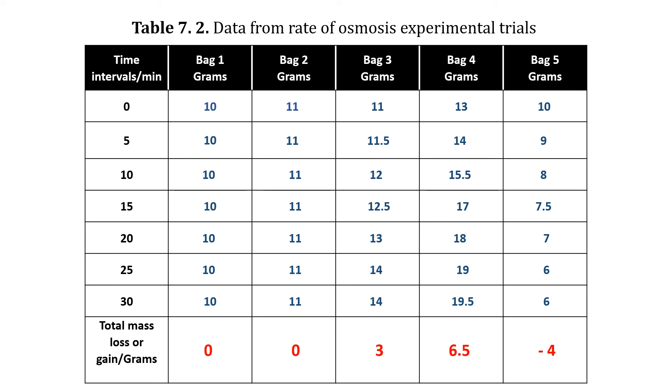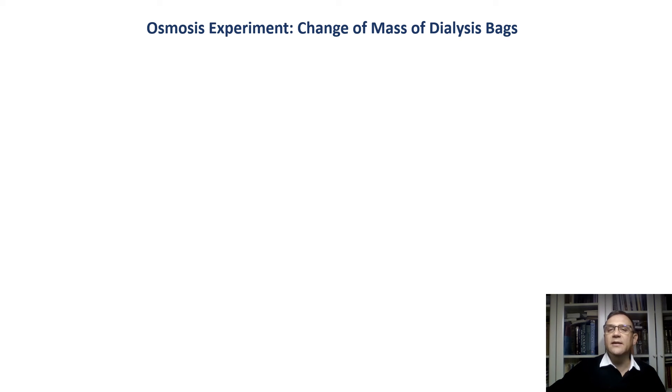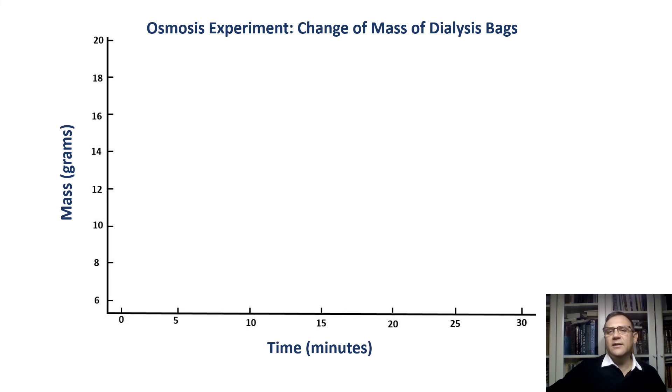Now using the data table, create a line graph that plots the data for each bag over time. Don't forget to start by writing the title of the graph. When creating the graph, remember to place mass on the y-axis, vertical axis, and time on the x-axis, horizontal axis. The x-axis represents the independent variable time, while the y-axis represents the dependent variable mass. Once you have completed the graph, ensure that you answer all the questions in the lab manual. Good luck!